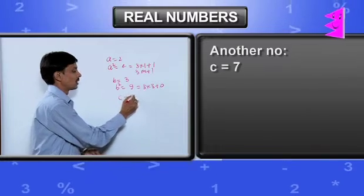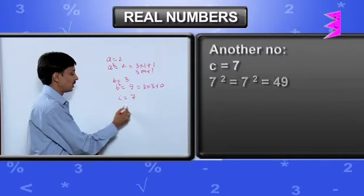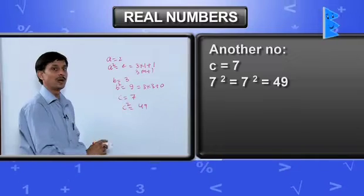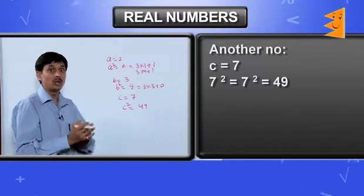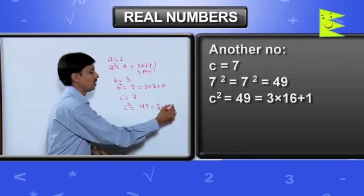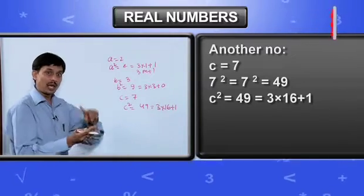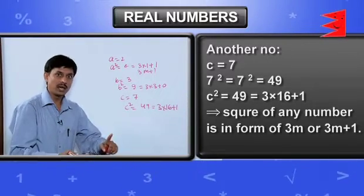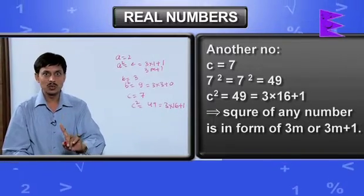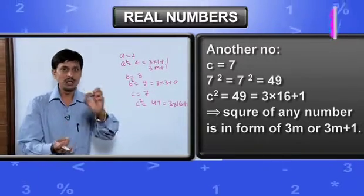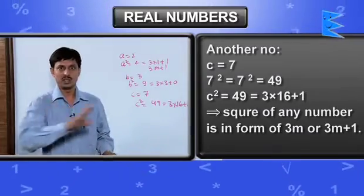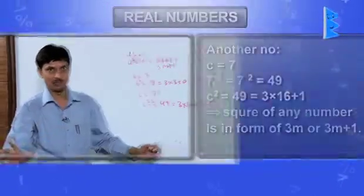Suppose you have taken a number 7. Its square is coming out to be 49. If the square is 49, then how can you think it is of which form? We can write it as 3 into 16 plus 1. Any number we take, we will find its square. When we find its square, this will be either a multiple of 3 or a multiple of 3 plus 1. These I have taken some examples.